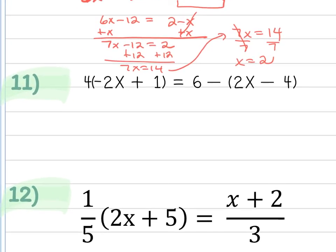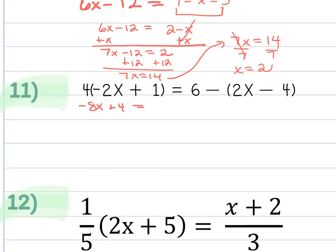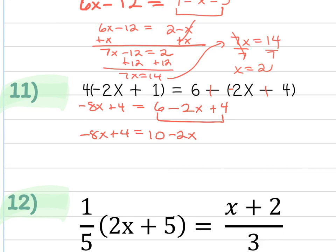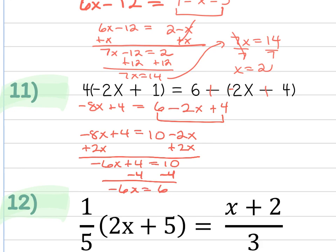Distributing first: 4 times -2 is -8x, and 4 times 1 is 4. Again, distribute a -1 or use keep-flip-change, giving 6 - 2x + 4. Combine like terms to get 10 - 2x. This side drops down. Move the variables: I get -6x + 4 = 10. Subtract 4, giving -6x = 6. Divide by -6, and x = -1.